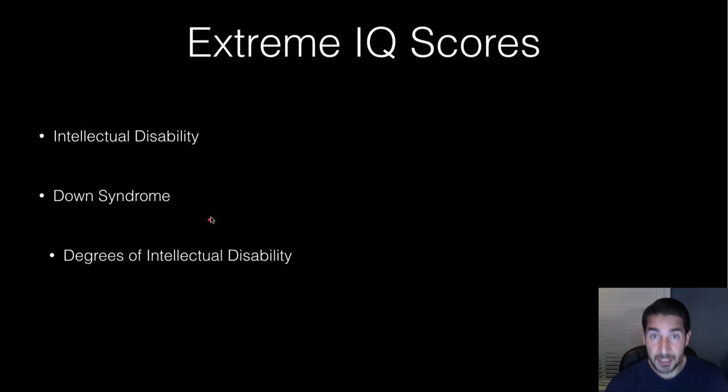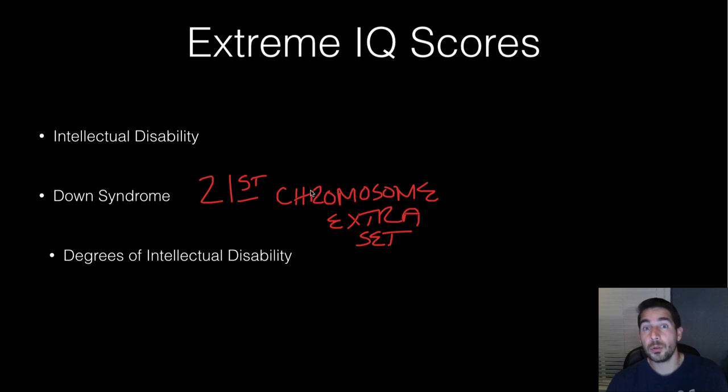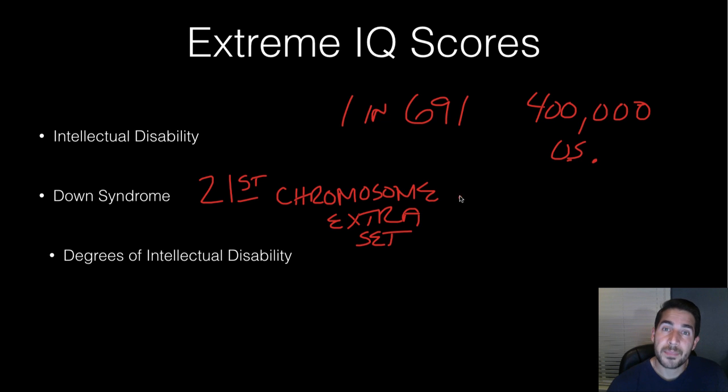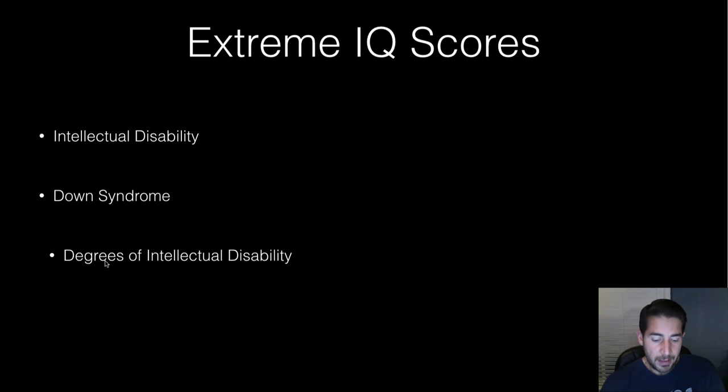Down syndrome is a specific intellectual disability. The 21st chromosome has an extra set. Normal humans have 23 pairs of chromosomes, children with Down syndrome have a duplicate copy of the 21st. There's roughly one in about 700 children born with Down syndrome. There's about 400,000 people with Down syndrome in the US today. Low adaptive behavior and low intellectual functioning are both hallmarks of Down syndrome.